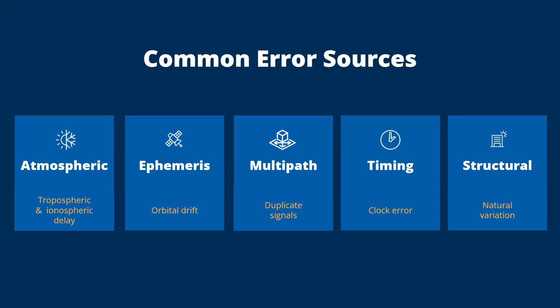Timing — error on the clock, whether it's on the satellite or on the receiver — is basically the foundation of GNSS. So if there's any error in the time, it's going to add a lot of error to our position. The last source is structural, and this isn't really an error in the classic sense. Structural error and natural variation is actual movement we're going to see in the structure we're measuring. That can be due to a lot of local factors, and if you're not prepared for it or don't understand what's happening, it can look like noise.